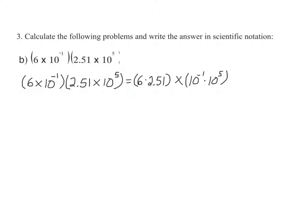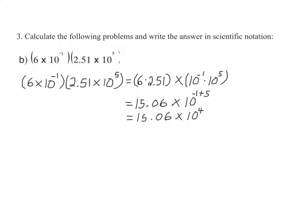6 times 2.51 is equal to 15.06. We rewrite the base 10 exponents with the same base and add the exponents — that is 10 to the negative 1 plus 5 — which gives us 15.06 times 10 to the fourth. But we're not finished, since the whole number in front, 15.06, is a number greater than 10.